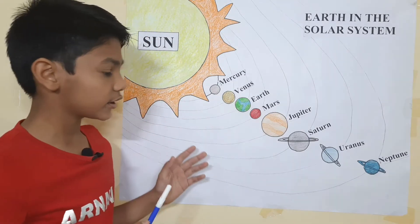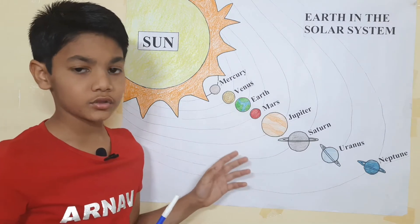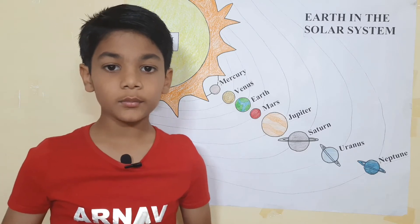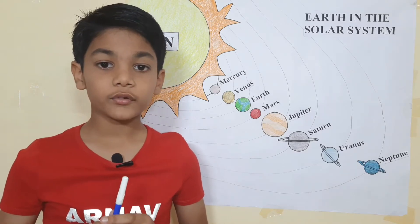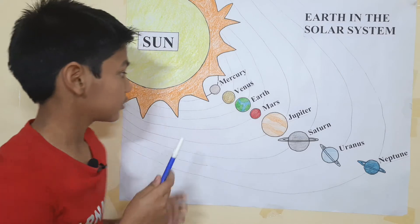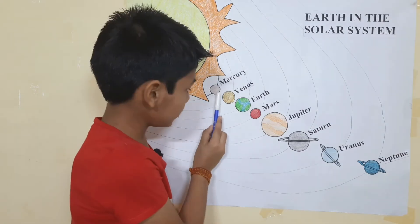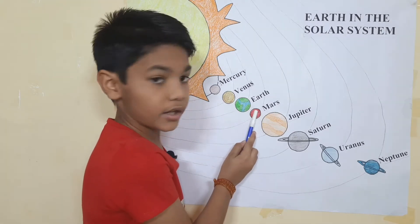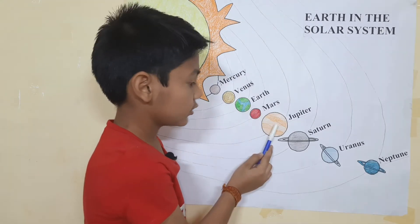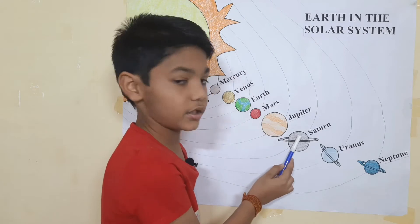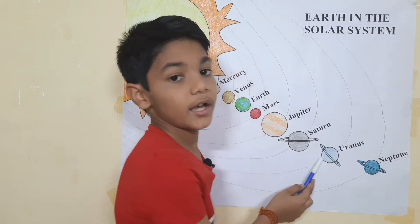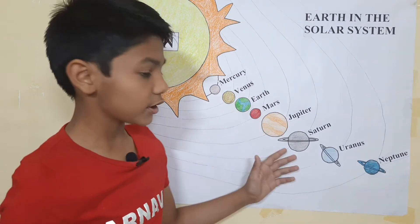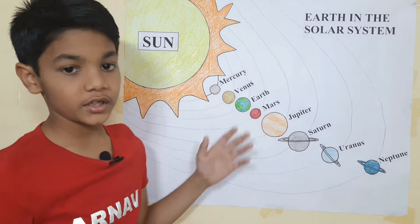Our solar system is 4.5 billion years old. There are a total of eight planets in our solar system. According to the distance from the sun, they are: Mercury, Venus, Earth, Mars, Jupiter, Saturn, Uranus, and the last one is Neptune.